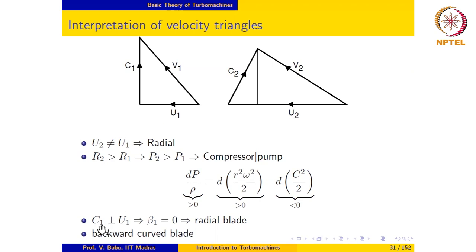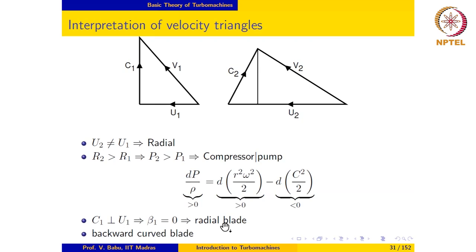We notice further that at inlet the relative velocity c1 is perpendicular to U1, and it is clear from this that β1, the blade angle at inlet, is equal to 0. Since the machine is a radial machine, this implies that the blade at entry is actually a radial blade — that is, it is aligned in the radial direction — since β1 is the angle that the tangent to the blade profile makes with the reference direction. In contrast, if the reference were the axial direction, β1 equal to 0 would suggest that the blade is axial.